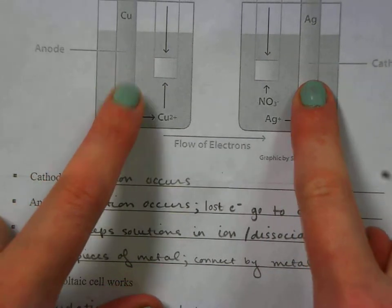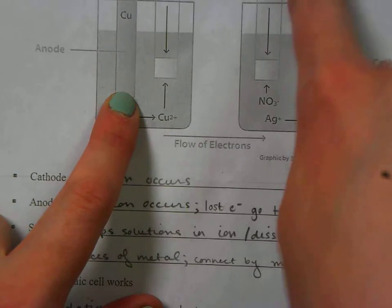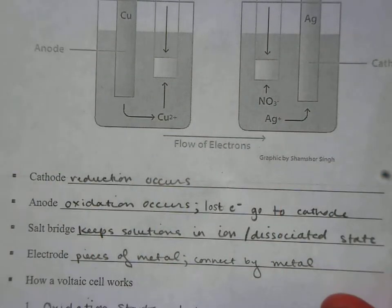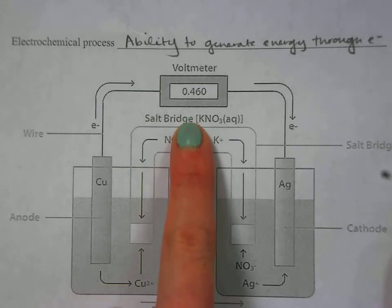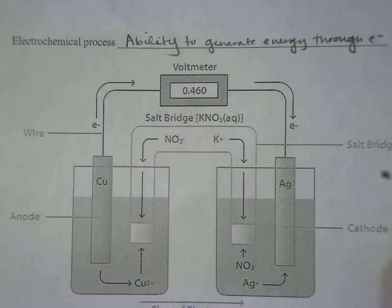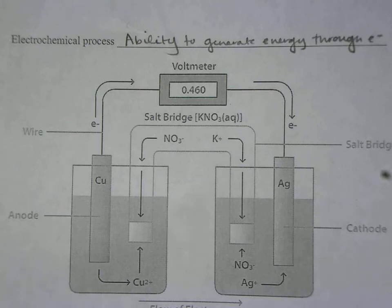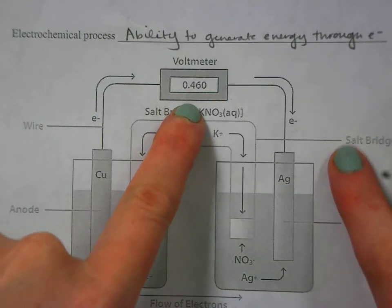The electrodes are just the pieces of metal and remember those have to be connected by a wire. And then the last part up here is your voltmeter. Volts, electricity, it's our way of measuring how much electricity we're actually generating in this cell. This is going to be your measure of success in the lab.